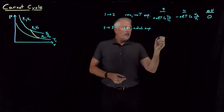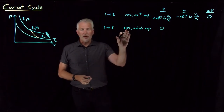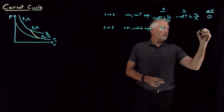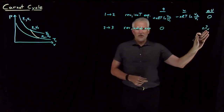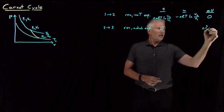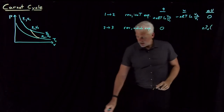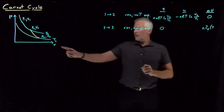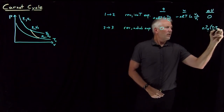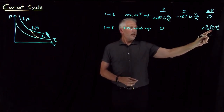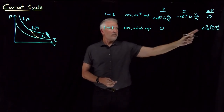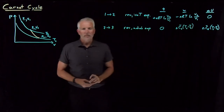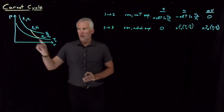For the adiabatic expansion: it's adiabatic and reversible, so the heat is zero. For an ideal gas whose temperature changes, the change in internal energy is N times C_V times the change in temperature — so N·C_V·(T_cold − T_hot). Because heat and work must add up to the internal energy change, the work must also equal N·C_V·(T_cold − T_hot). Those are the heat, work, and internal energy change for this adiabatic expansion.